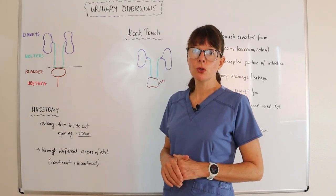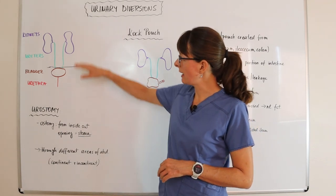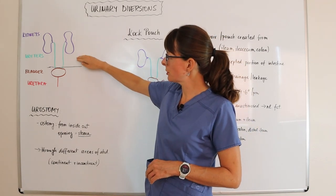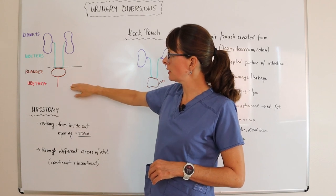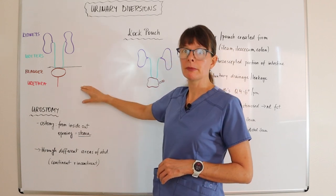As a review for anatomy, we have our kidneys, the ureters, the bladder, and the urethra to filter and eliminate urine.